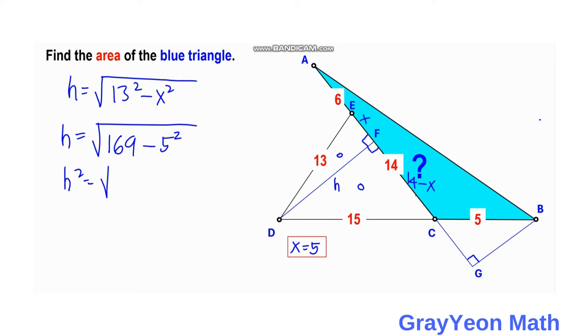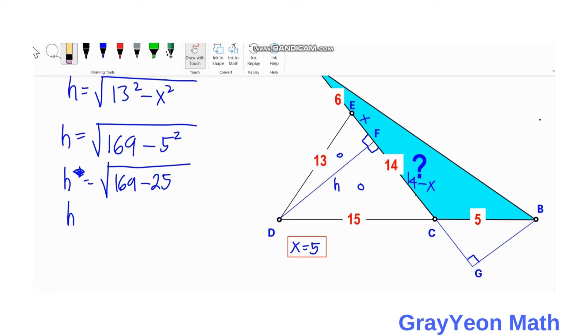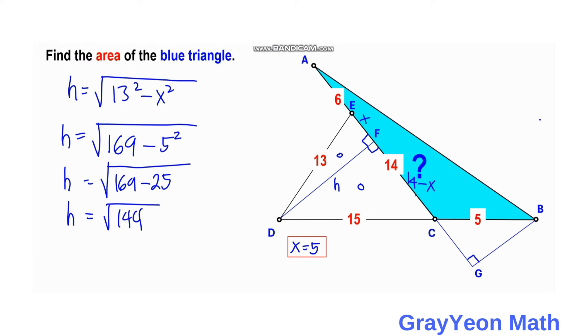So H squared is equal to 169 minus 25, which gives us H is equal to the square root of 144, or H is equal to 12 units.